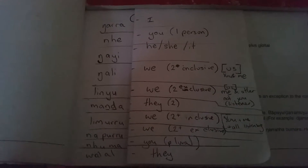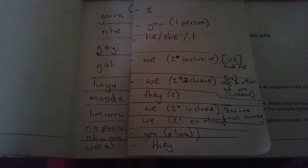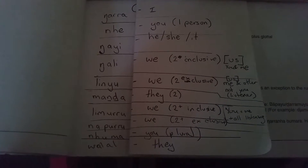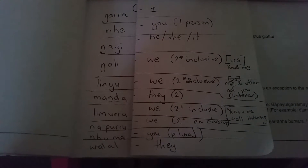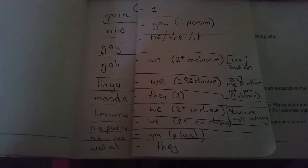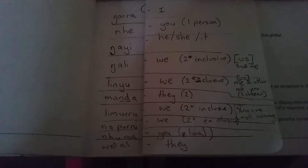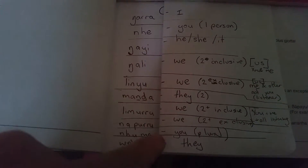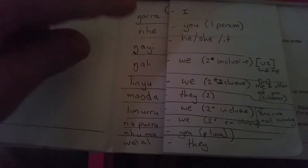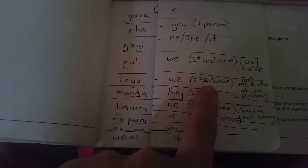The pronouns in Djambarrpuyngu are slightly different to those in English in that they go into more detail. In English we don't have a lot of detail — as you can see down the side here, we've got a lot of repetition with 'we', etc. Whereas in Djambarrpuyngu they go into more detail, and they also have inclusive and exclusive.